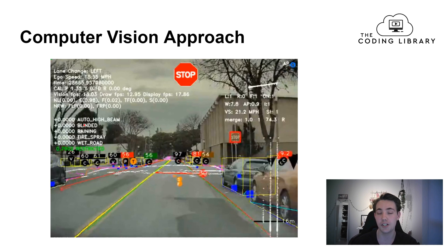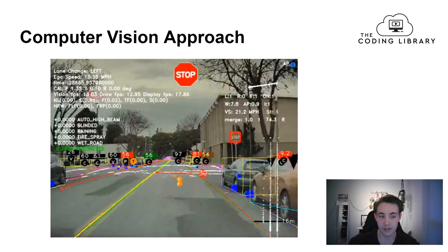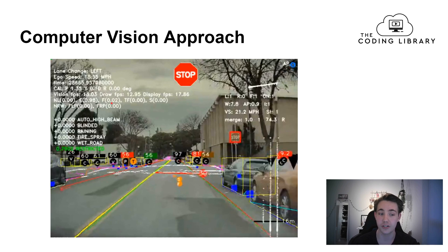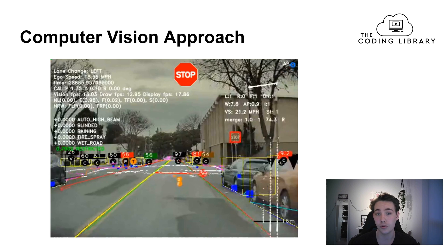There's also additional information displayed, like lane change direction — for example, left — and frames per second. Currently it's processing 13 frames per second, and it performs all predictions and calculations on each frame while driving in the environment.